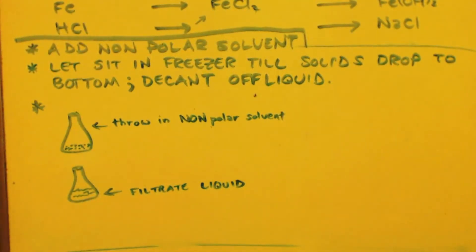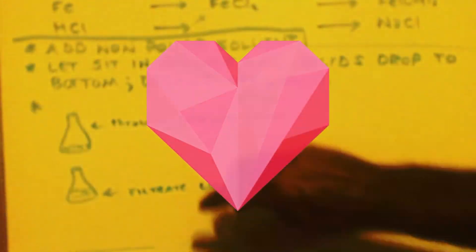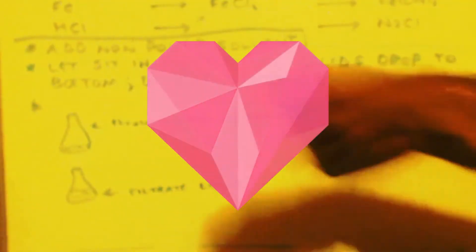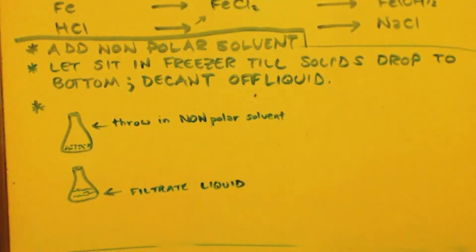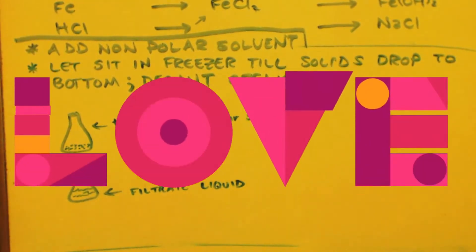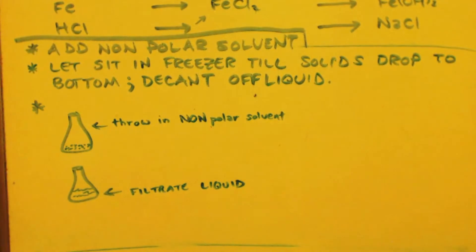Now throw in some more of that same non-polar solvent into here. Grab the top of the flask and shake it around. Mix it all up because your methylamine is going to be in that little bit of liquid that's in there. And you want to soak it up and get it out of there. Shake it up. Put it in the freezer for a little bit and let it sit so it absorbs all the methylamine.